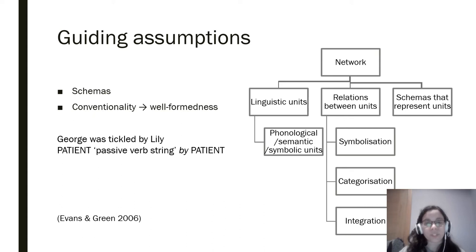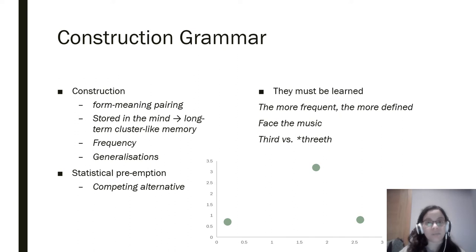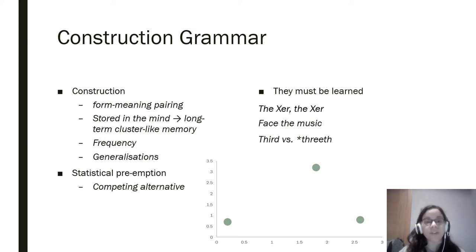Schemas are formed by generalization, so they are based on frequency. If a new instance of a word can be categorized into an existing schema, then the word is considered well-formed. We move now to construction grammar, which is a cognitive approach to grammar. Here a symbolic unit is called a construction. The main difference with other approaches is that constructions must be learned. The most typical example is an idiomatic expression such as 'face the music.' However, constructions are also schemas, such as 'the more the better.' Like other schemas, constructions are stored in the mind and the more we hear them, the more data we have.